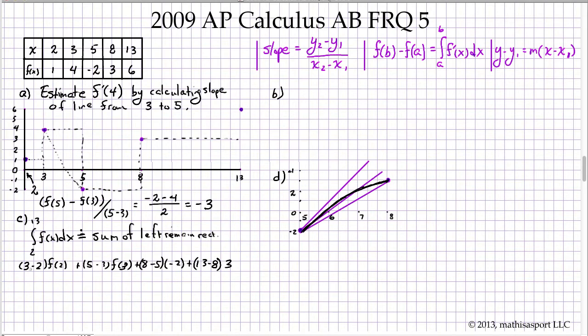Notice as always with left Riemann sums, the value at the far right side never enters into the calculation. 3-2 is 1, f(2) is 1, so that's 1 times 1. 5-3 is 2, f(3) is 4, so that's 2 times 4 which is 8. 8-5 is 3, f(5) is -2, giving us -6. 13-8 is 5, f(8) is 3, so that's 15. We add all of these up: 1 plus 8 is 9, minus 6 is 3, plus 15 is 18.